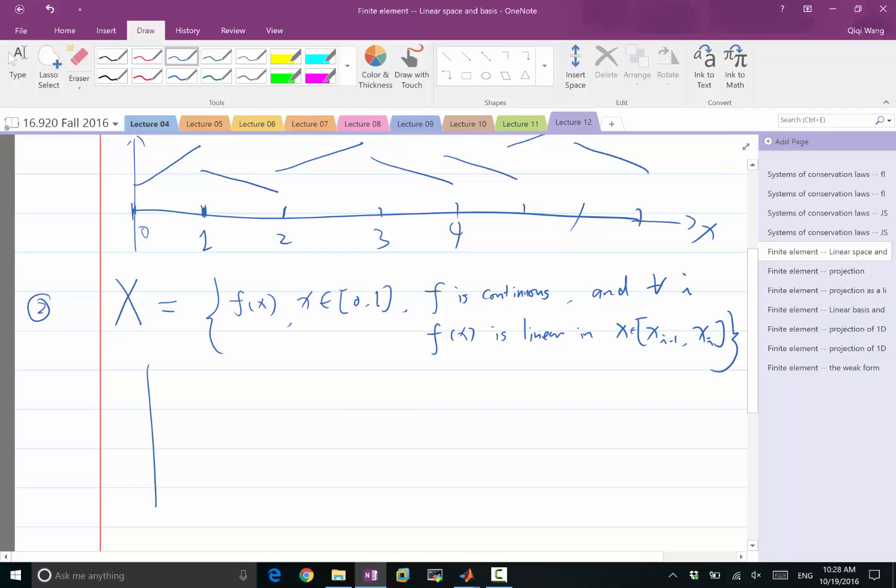So this is a space that I require the function to be not only piecewise linear, but continuous. So these are these kind of piecewise lines that I can draw with one stroke.